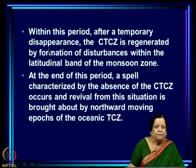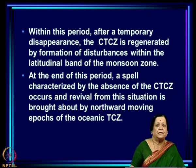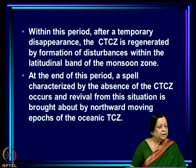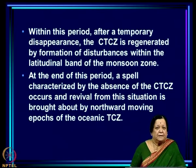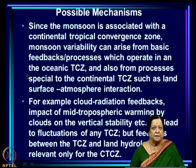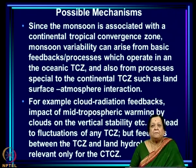Within this period, after a temporary disappearance the CTCZ is regenerated by formation of disturbances within the latitudinal band of the monsoon zone. At the end of this approximately 4-week period, a spell characterized by the absence of the CTCZ occurs, and revival is brought about by northward-moving epochs of the oceanic TTCZ. Sikha and Gadgir, in that paper, also considered what the possible mechanisms might be.